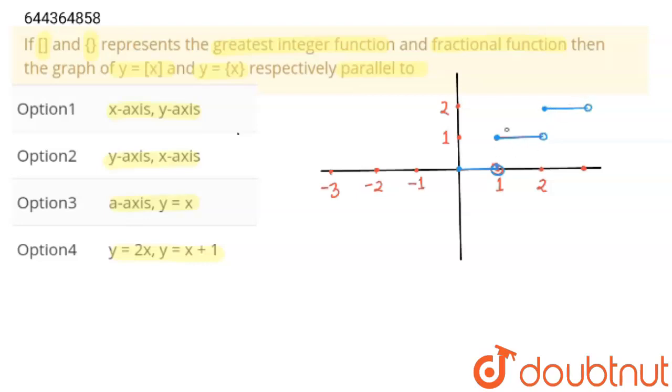And here this is closed bracket. If you will see, this line is parallel to x-axis. This curve is parallel to x-axis. And if you draw between minus 1 to 0, if this is minus 1 on y-axis, then this line will be open bracket over here and closed bracket. So this is y equals greatest integer x and this is parallel to x-axis.